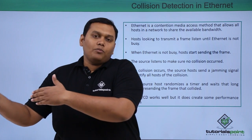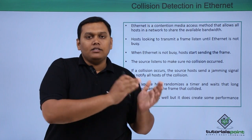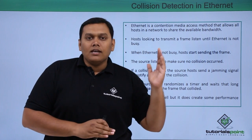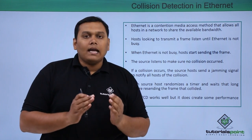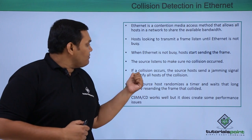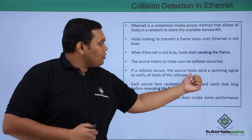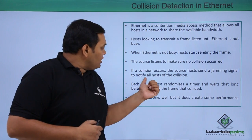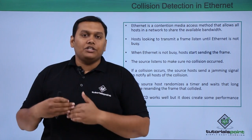When no busy signal is sent by Ethernet, the host will send the data and also the source listens to the Ethernet to ensure there is no collision. If a collision occurs, the source host sends a jamming signal to all the other hosts and notifies them about the collision.